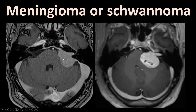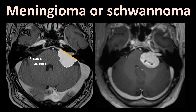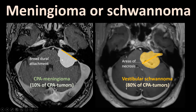The only difficult differential diagnostic problem arises with cerebellopontine angle tumours — how to distinguish meningioma from schwannoma there? Meningiomas still have a broad dural base, while vestibulocochlear schwannomas lack a broad dural attachment, follow the nerve course, and when large often contain areas of necrosis. And use statistics: about 80% of CPA tumours are schwannomas, while CPA meningiomas form only about 10% of CPA tumours.